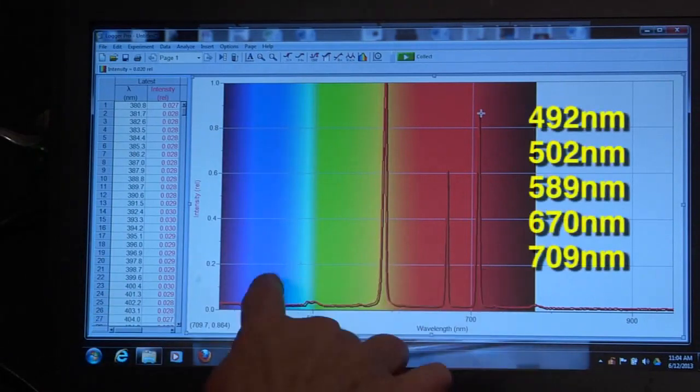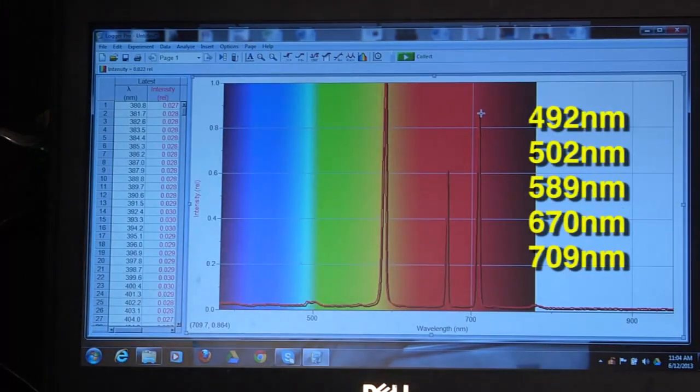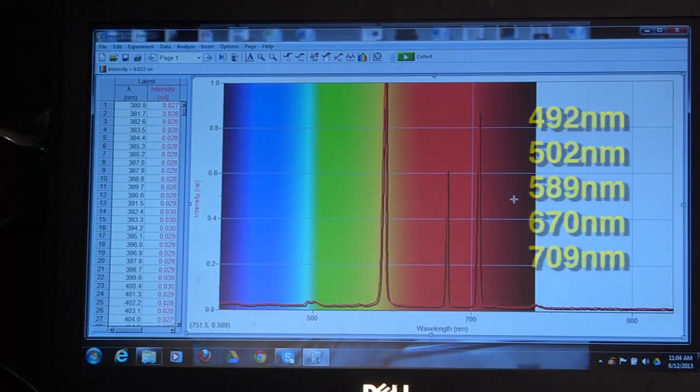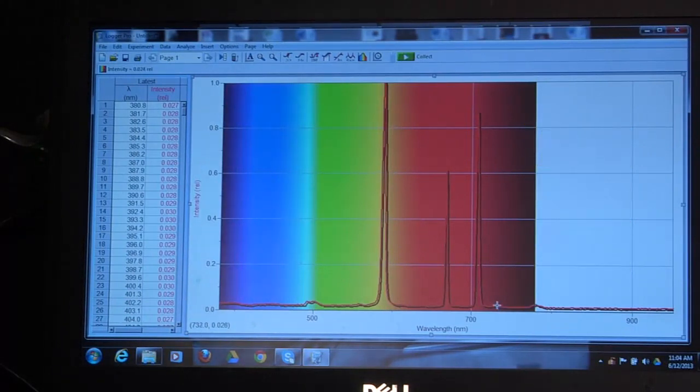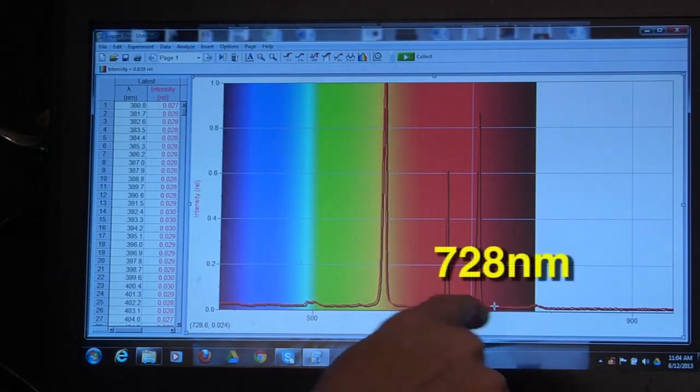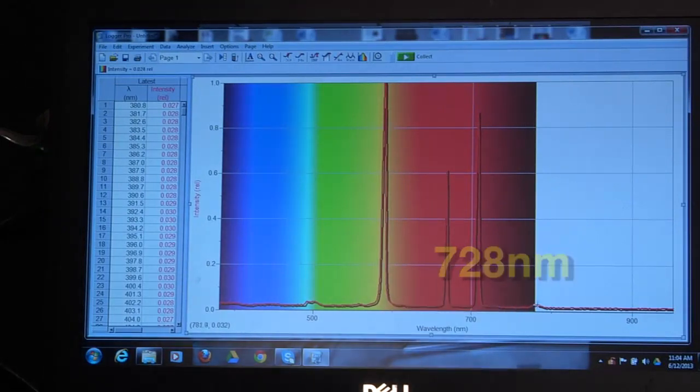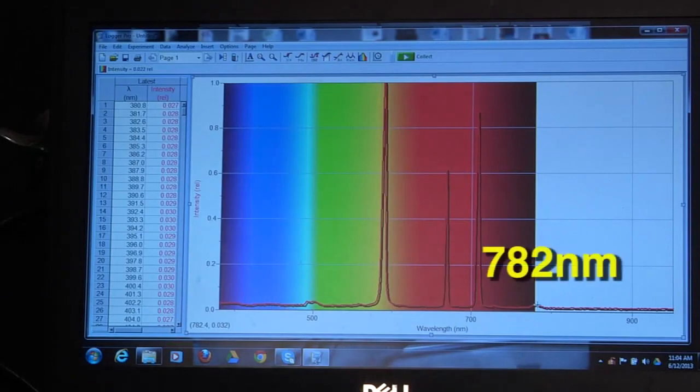So these five characteristic wavelengths. You can even see tiny ones here that are often very difficult to measure. One small one right here at 728, and another one here at 782.